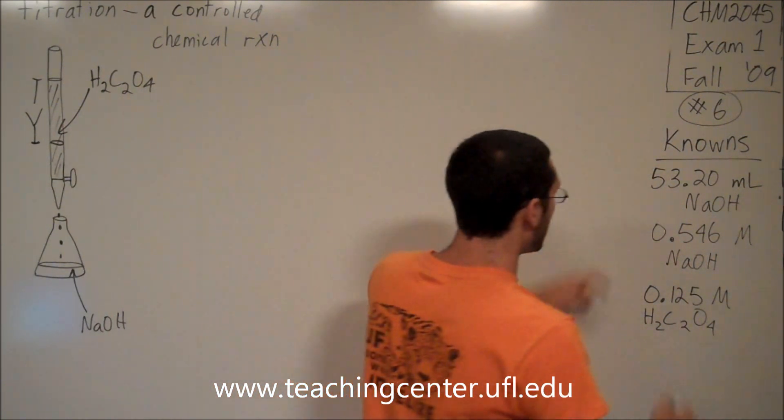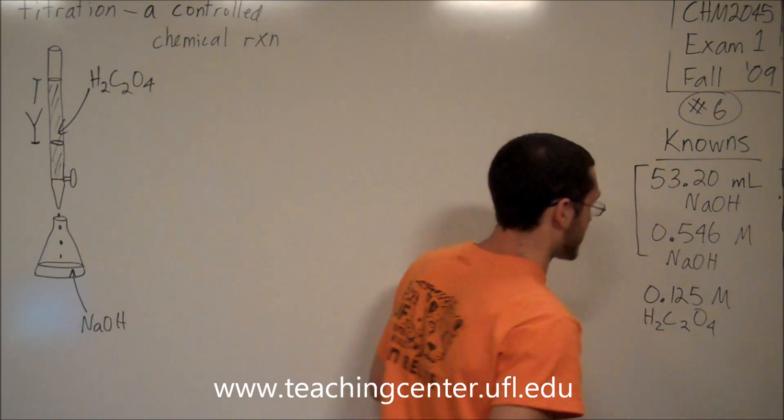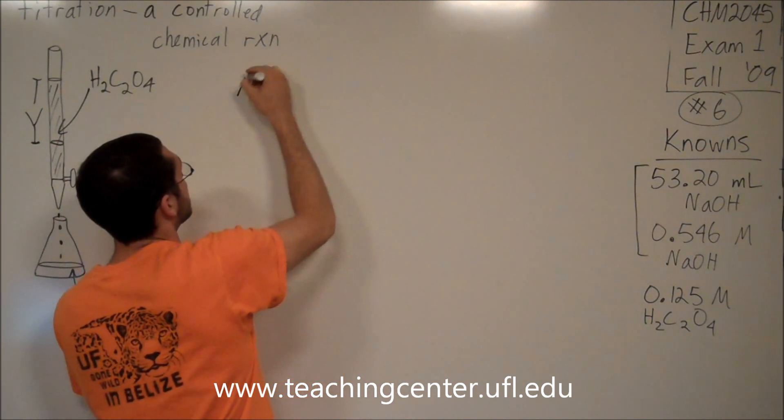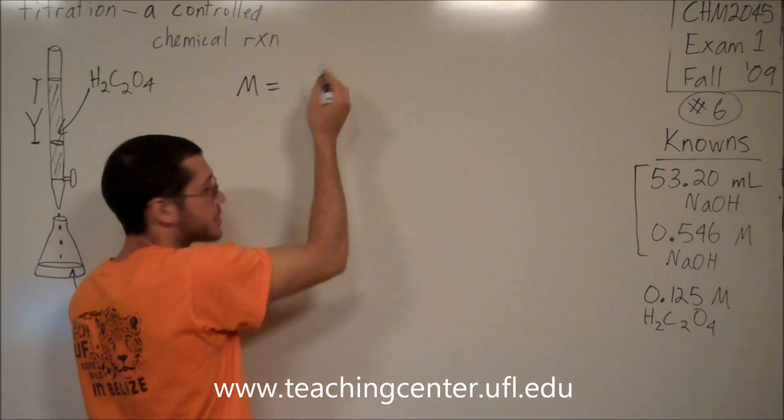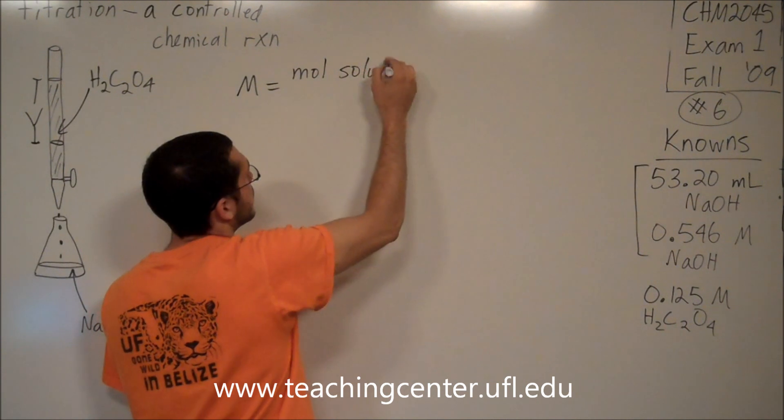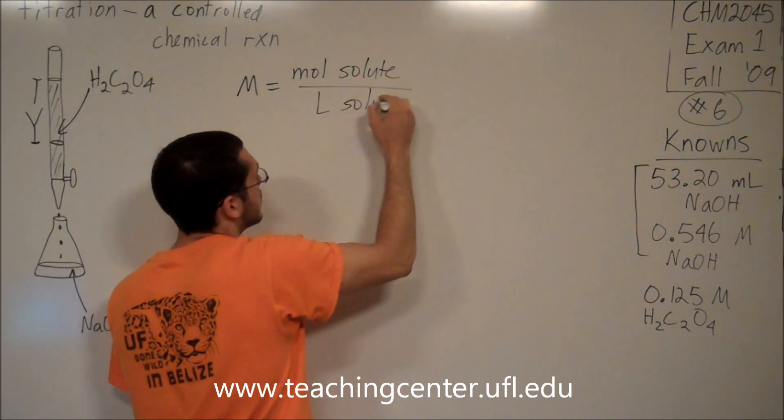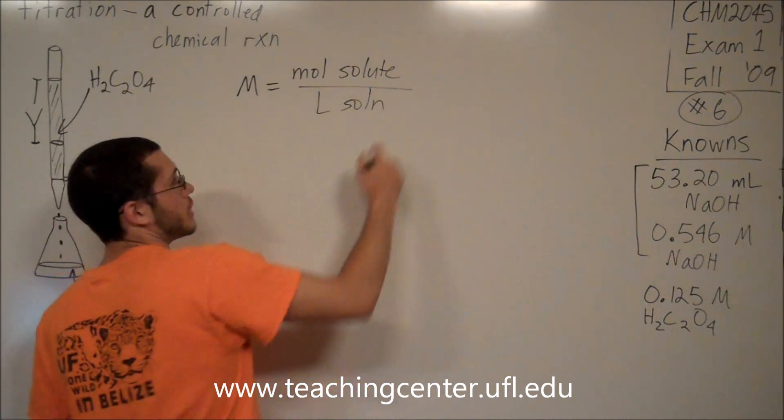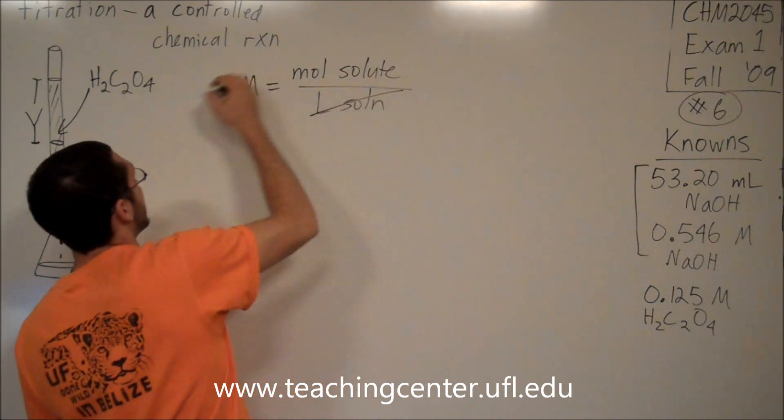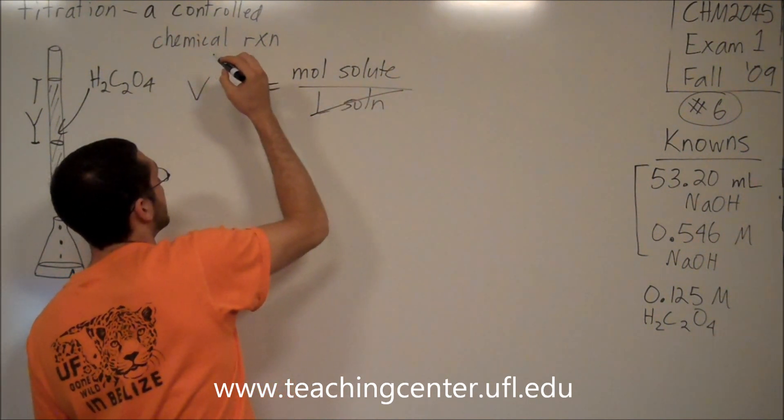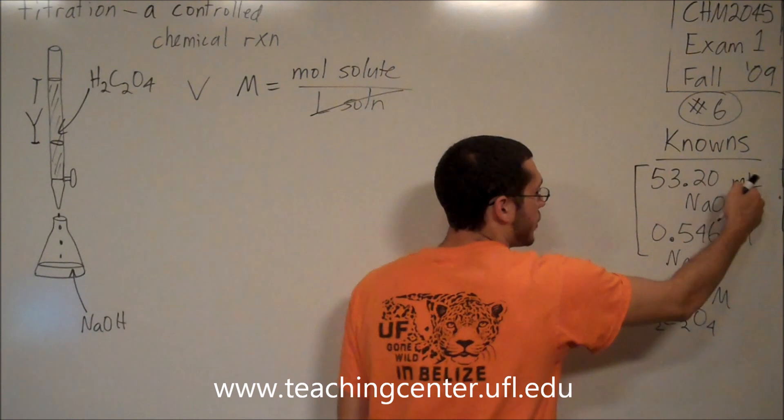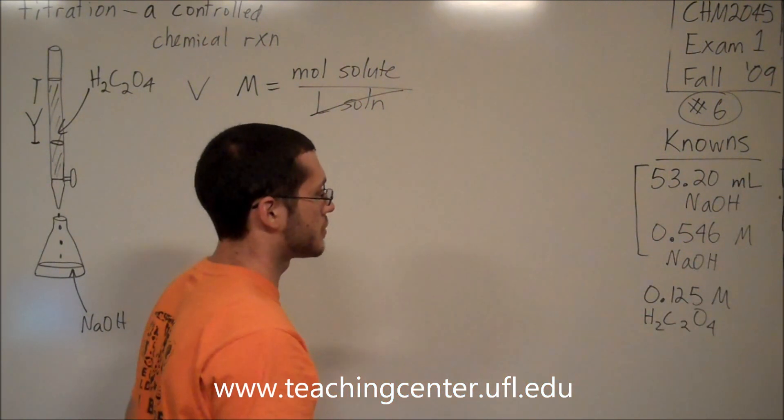That's very important. Since we know both concentration and volume of sodium hydroxide, we can get to moles. Because the molarity of a solution, the big M, the concentration, is the moles of solute divided by the liters of solution. The liters of solution is the volume. So what I can do is multiply both sides by the volume, and then volume times molarity gives me moles. That's very nice. So now I can get moles of sodium hydroxide.